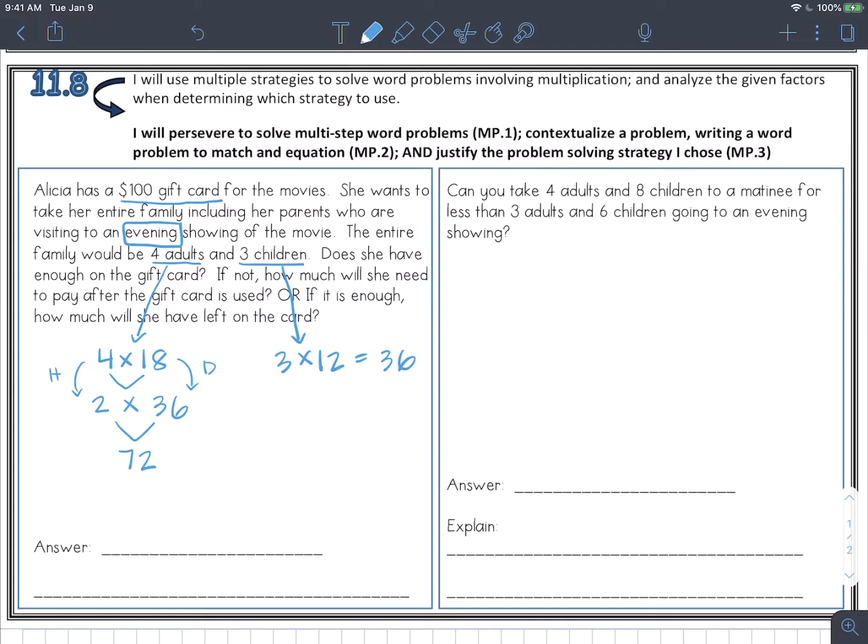So now I'm going to add the four adult tickets, $72, plus the three tickets for the kids, $36. And I'm going to get my grand total. So it would cost them $108. So she only had a $100 gift card. So would she have enough? No. She does not have enough on just the gift card to cover those tickets. So how much will she have to pay? She's going to have to pay $8 out of her own money to cover the $108. $100 from the gift card and $8 of her own.